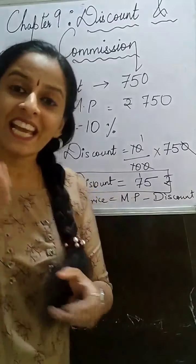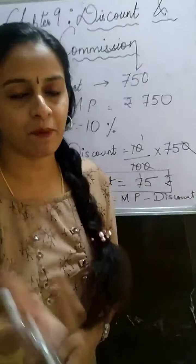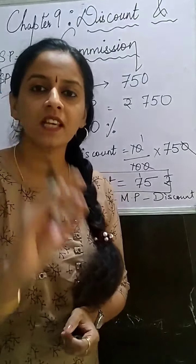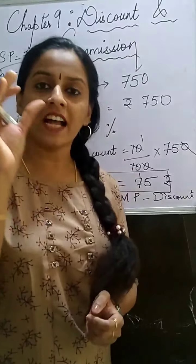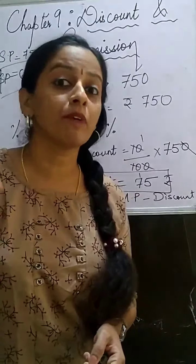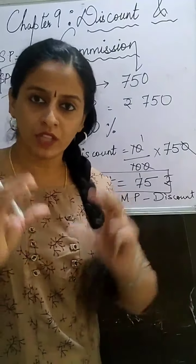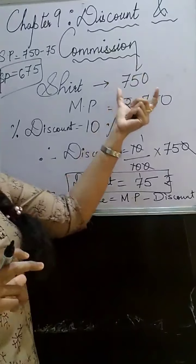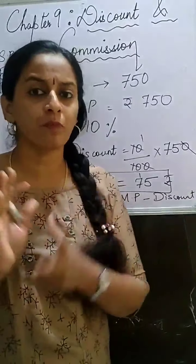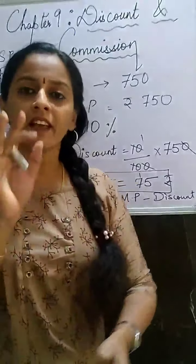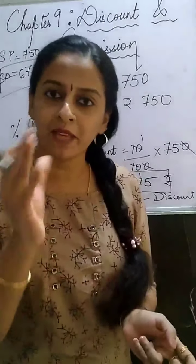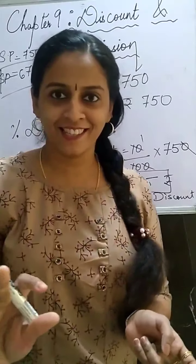So it is simple to calculate. Always remember: when discount is given in percentage, you write that percentage upon 100 into the marked price — for example, 40 upon 100 into marked price gives the discount. Subtract that discount from marked price to get the selling price. There is no need to memorize the formulas hard — it is understood that if you are getting a discount, the marked price will be bigger and what you pay will be less.